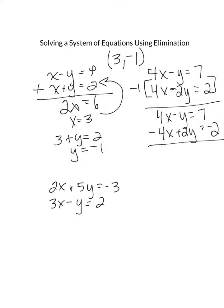4x negative 4x, when I add them together that's going to be gone. A negative y and 2y is going to give me a positive y equals, and then a 7 and negative 2 is going to give me a 5. So y's value is 5.